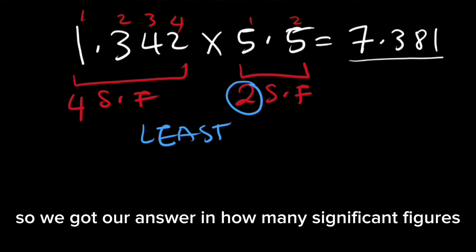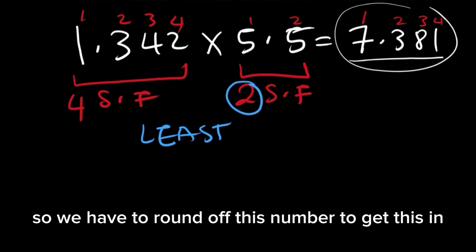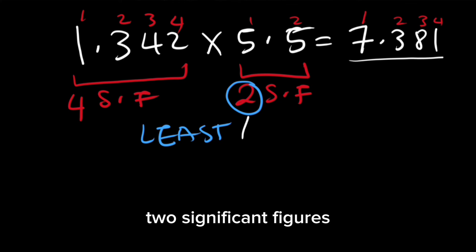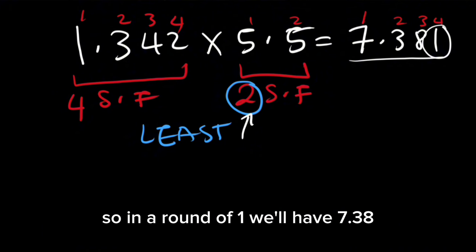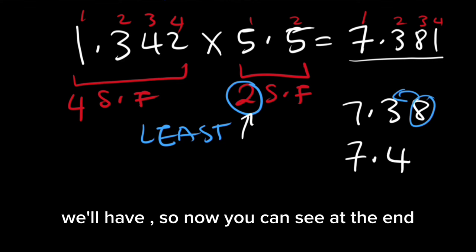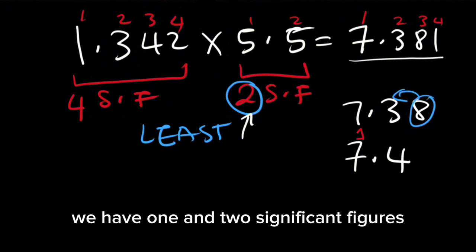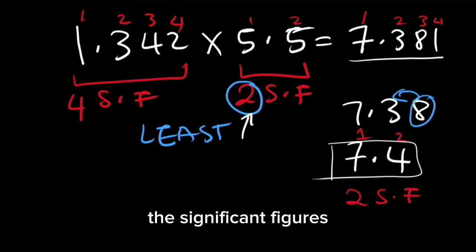So we got our answer in how many significant figures? 1, 2, 3, 4. So we have to round off this number to get it in 2 significant figures. We'll start off by rounding off the 1, so we'll have 7.38. Then again we'll round off the 8 — we'll have 7.4. So now you can see at the end we have 1 and 2 significant figures, and this is how you should multiply significant figures.